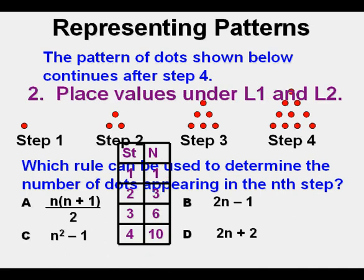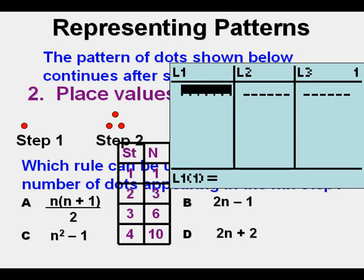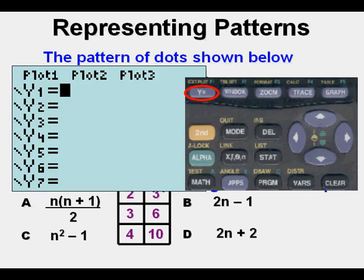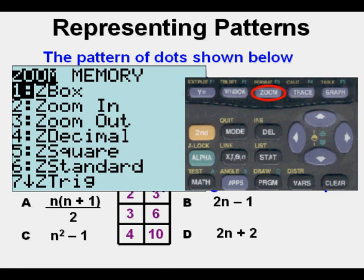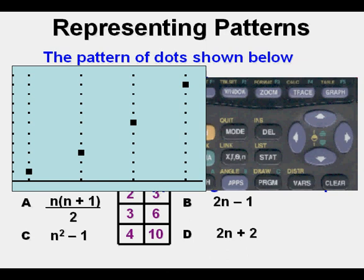We do this by pressing stat, enter, and we enter the four points. Next we go to y equals, make sure our plot one is turned on. Then we go to zoom nine, which is zoom stat, and that plots our four points for us.